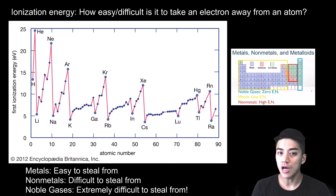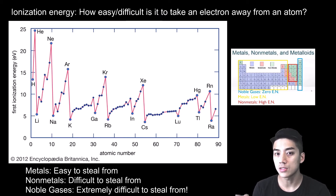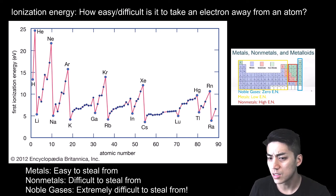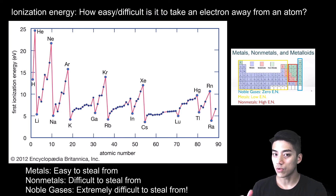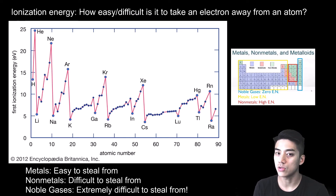The last trend is ionization energy — basically how much energy is required to take away an atom's electron to turn it into an ion, or how easy or difficult it is to steal an electron from an element. On the graph you'll see spikes and zigzags. The alkali metal family — lithium, sodium, potassium, rubidium, cesium — tends to be at the bottom of the chart because it's quite easy to steal from them. Metals are really easy to take electrons from because they're looking to get rid of those electrons anyway.